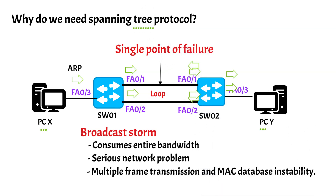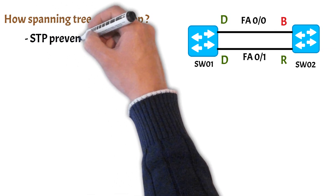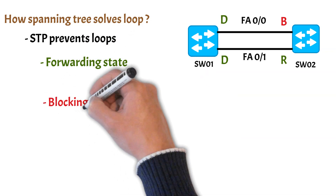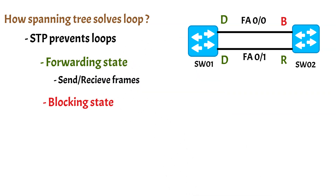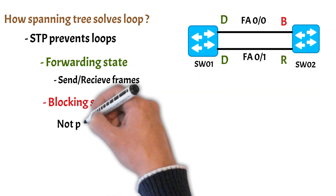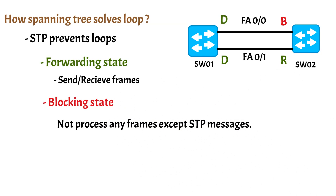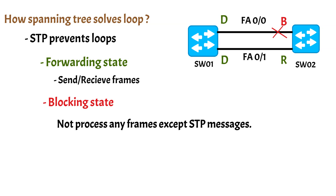So let's see how spanning tree solves loops. STP prevents loops by placing each switch port in either a forwarding state or a blocking state. In a forwarding state, interfaces will receive and forward frames as usual. In a blocking state, it will not process any frames except STP messages. By blocking port FA0/0 of switch 2, no data traffic is sent on that link and the loop in the network is eliminated.